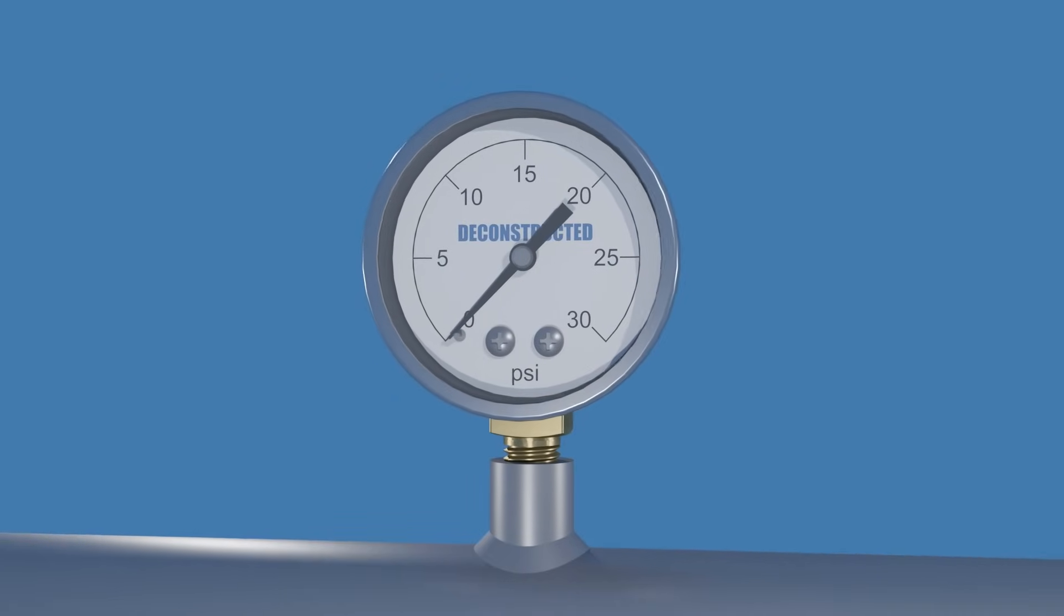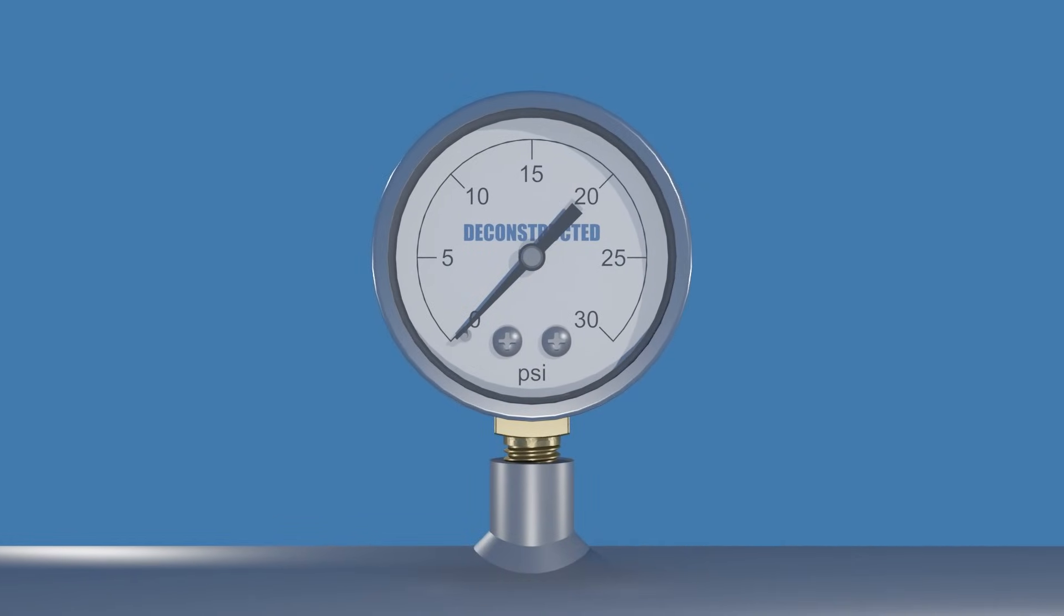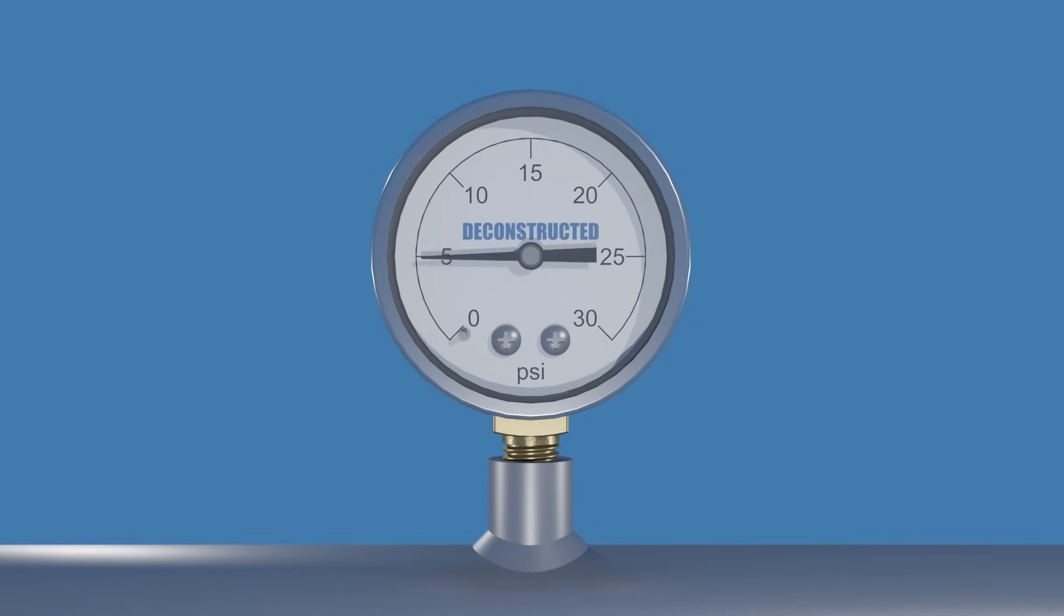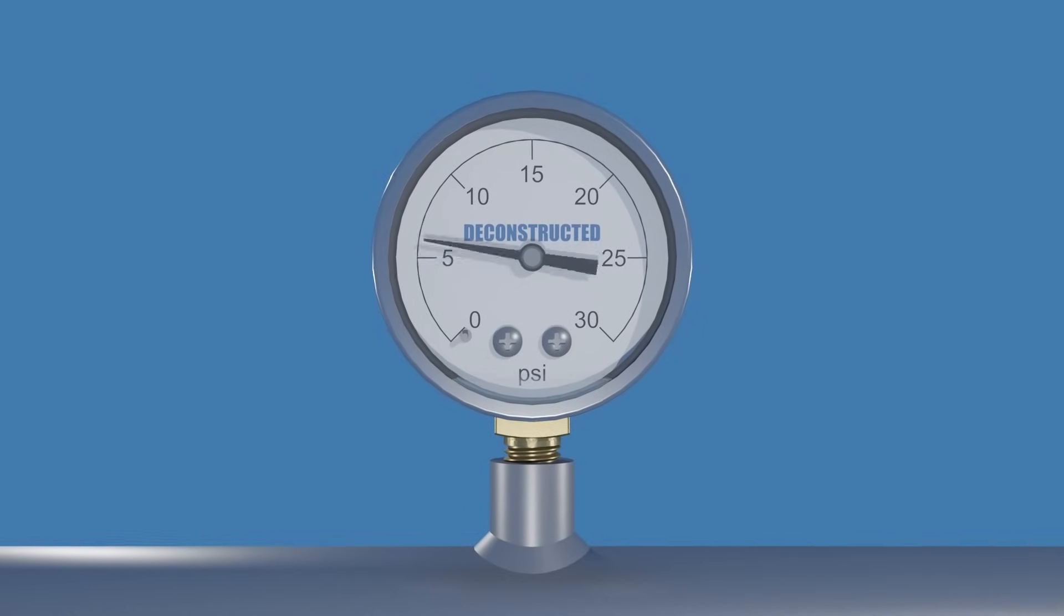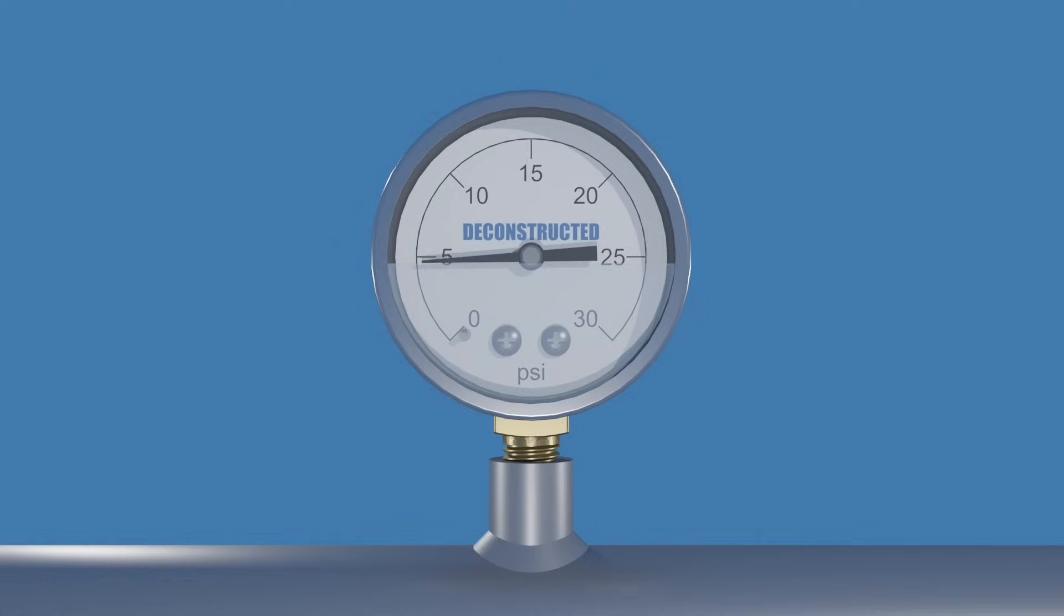Now back to our journey into the mechanics of pressure gauges. Dry pressure gauges are best suited for dry environments, but are sensitive to high physical stress. One of the main advantages of wet gauges is that the liquid dampens vibrations and pressure spikes, preventing them from being transferred to the internal mechanism.